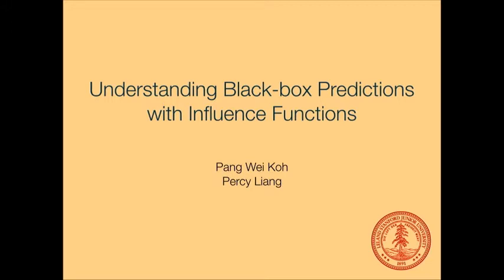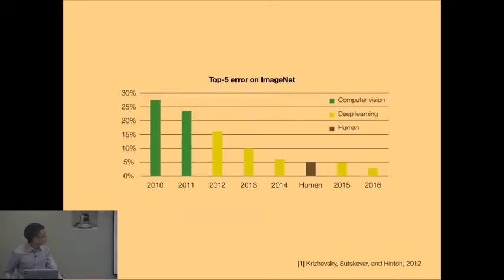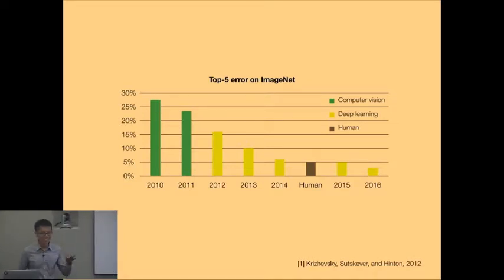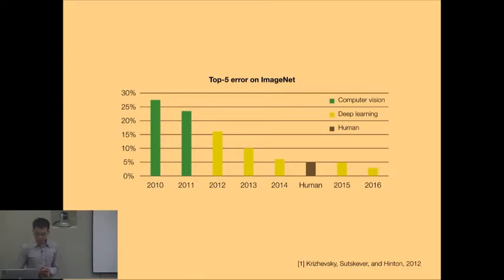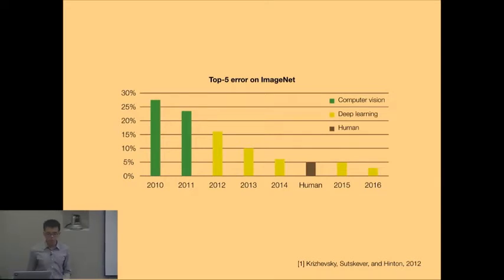This talk is going to be about how a simple decades-old idea from statistics can help us interpret today's black box models. In recent years there's been an explosion of interest in machine learning, with convolutions and Q-learning and so on. This explosion has been driven in part by the gains in accuracy that machine learning models have made in a lot of different tasks, like object recognition, so much so that on many real-world tasks, machine learning models have performance comparable or better than what humans can do.